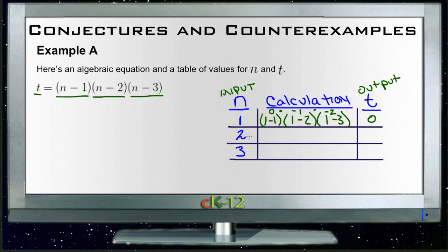Let's take a look at input of 2. If we plug 2 in, we get 2 minus 1 times 2 minus 2 times 2 minus 3. Now again, this comes out to be a number and this comes out to be a number, but our middle term again is 0. And since everything is being multiplied, our output again is 0.